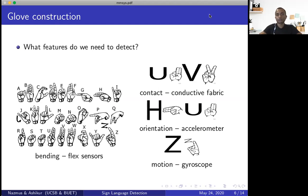So I'm going to start with the glove construction phase. In this phase, we wanted to answer the question: what features we need to detect a particular set of sign language? As an example, if you look at the American Sign Language shown on the left, and this is also true for Bengali Sign Language, the primary distinctive feature seems to be bending. And we can detect bending using flex sensor.